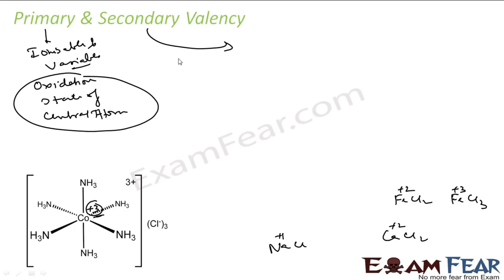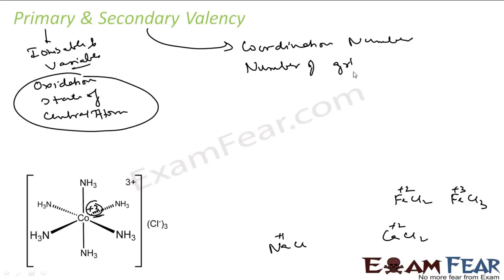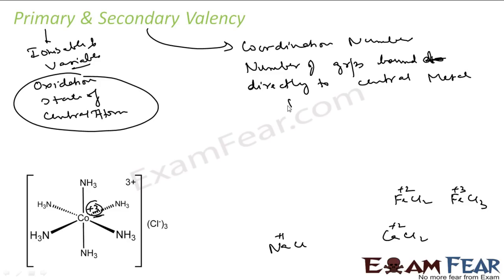Secondary valency is also called coordination number. It is the number of groups or ligands bound directly to the central metal ion. For example, in this case there are 6 ammonia molecules, so the coordination number, or secondary valency, is 6. The key point is that secondary valency is non-ionizable and fixed for a given metal.